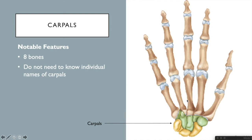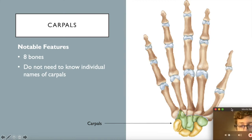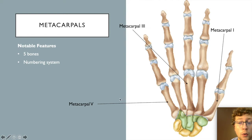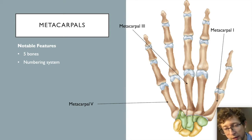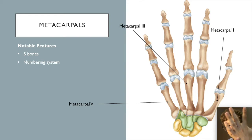At the elbow joint, the head of the radius pairs with the capitulum and the trochlear notch of the ulna wraps around the trochlea. Moving distally, carpal bones form the wrist — these are where the radius and ulna attach. After the carpal bones come the metacarpal bones, found in the palm of the hand. Many people think the palm is just solid tissue, but individual long bones — metacarpals — can actually be felt on the back of the hand.